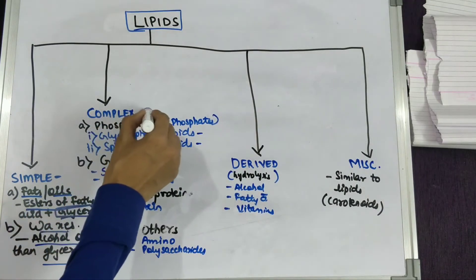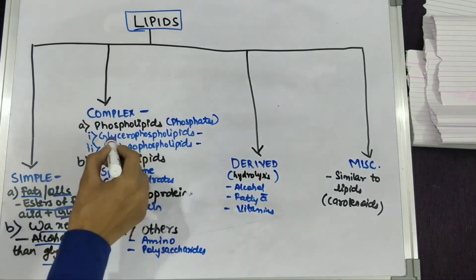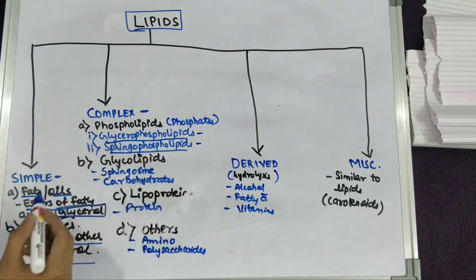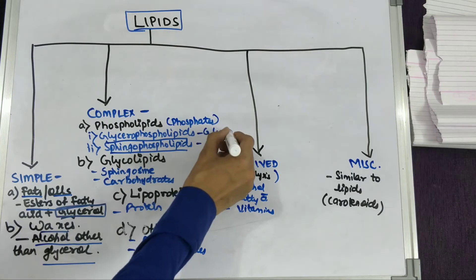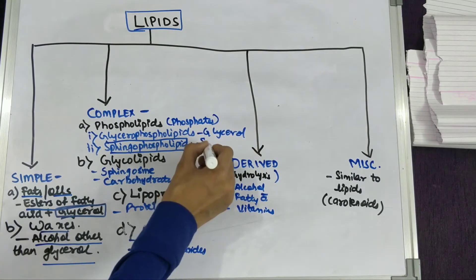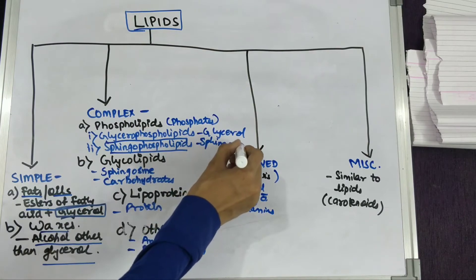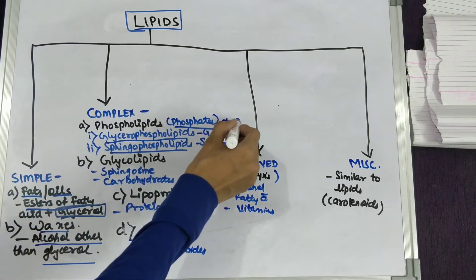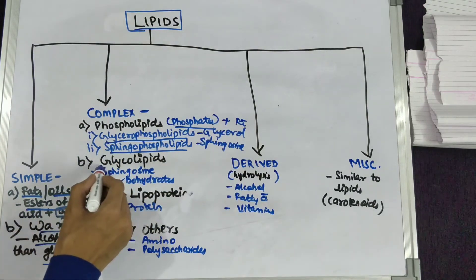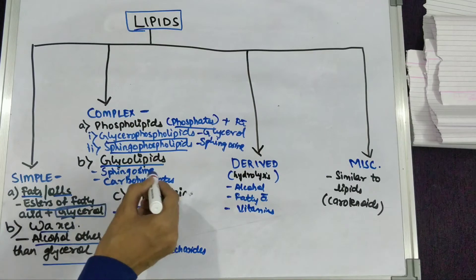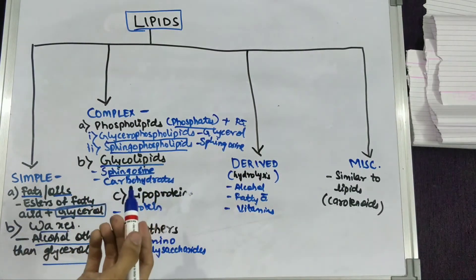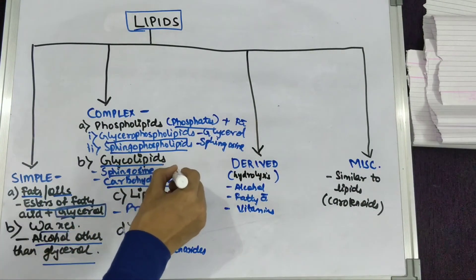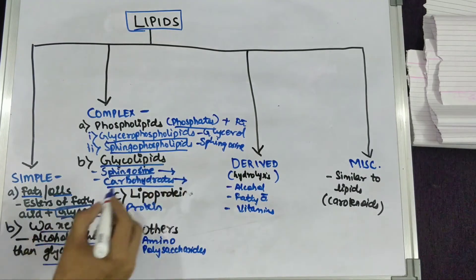The second type is complex lipids. Complex lipids include phospholipids, which contain a phosphate group. They are further classified into glycerophospholipids and sphingophospholipids: glycerophospholipids contain glycerol as the alcohol, while sphingophospholipids contain sphingosine as the alcohol. Hence phospholipids contain phosphate plus fatty acid. The second type of complex lipids is glycolipids — they contain sphingosine as the alcohol and carbohydrates, and they do not contain a phosphate group or glycerol.